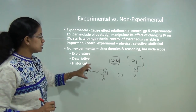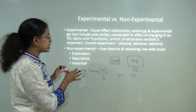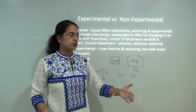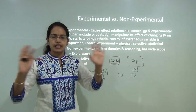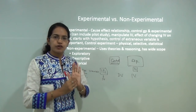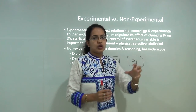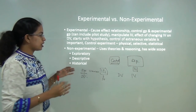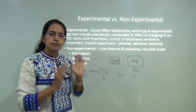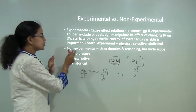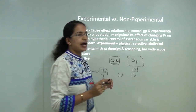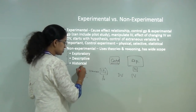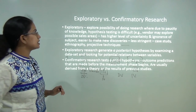Experimental controls can be physical — limiting the number of people in a room, controlling the ambience — or selective, such as picking specific age groups, or statistical controls during calculation. Experimental studies are primarily based on cause-and-effect relationships. Non-experimental studies use theory and reasoning and have a much wider scope. The common types of non-experimental research are exploratory, descriptive, and historical.